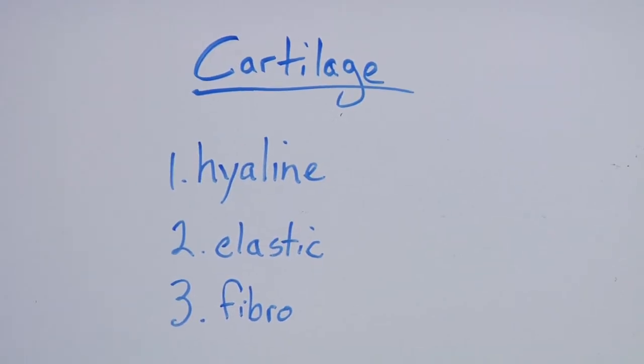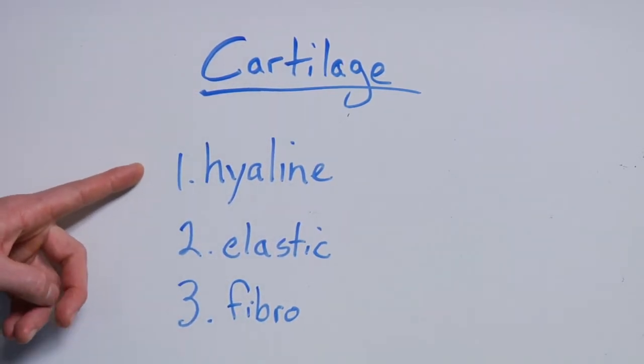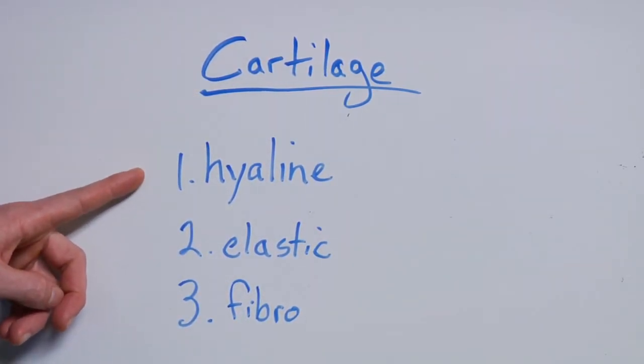Cartilage can be broken down into three main types. First you have hyaline. Hyaline is a type of cartilage that is transparent and usually covers the ends of bones. It gives them a smooth coating. You find hyaline cartilage in places like your nose and on the end of other joints.